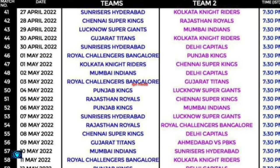April 30th: Gujarat Titans vs Kolkata Knight Riders. April 30th: Sunrisers Hyderabad vs Delhi Capitals. May 1st: Royal Challengers Bengaluru vs Punjab Kings. May 1st: Kolkata Knight Riders vs Chennai Super Kings. May 2nd: Mumbai Indians vs Delhi Capitals. May 3rd: Royal Challengers Bengaluru vs Gujarat Titans. May 4th: Punjab Kings vs Lucknow Super Giants.